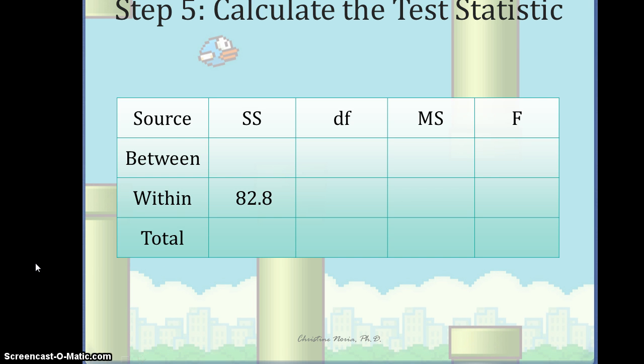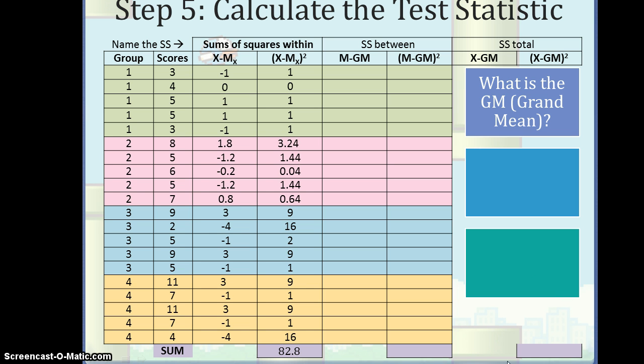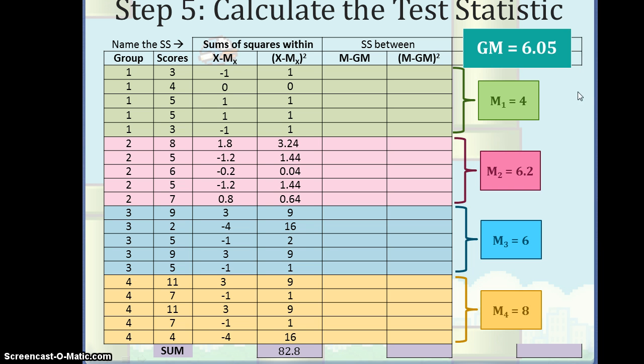So now we're going to go back and calculate our sums of squares between. First we have to talk about this little GM here. What is the grand mean? Well, it's the mean of all of our individual x-scores, regardless of the group that they are in. So we use the sum of all the x's divided by the total number of participants. And that will give us our average, as opposed to having a group mean of, say, for this first group 4. So in our case, if we add all of these x-scores up, we'll get a sum of 121. We divide by 20 participants, and we get a grand mean of 6.05.